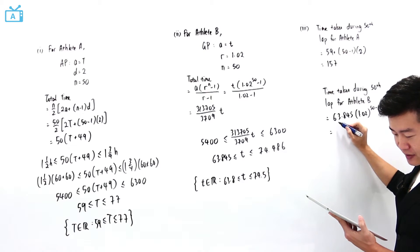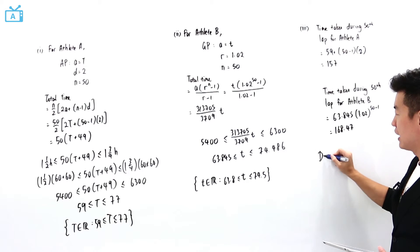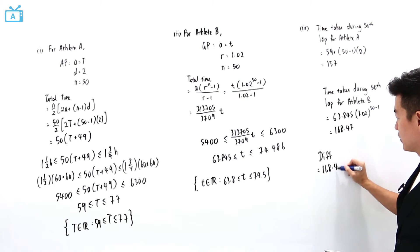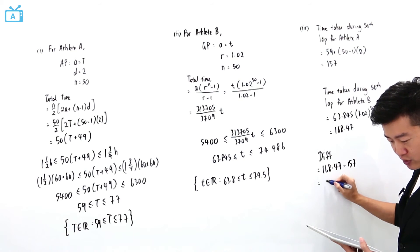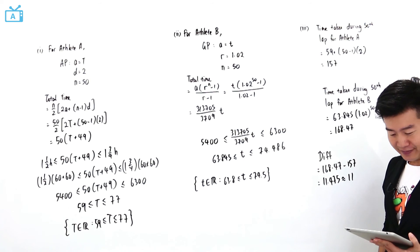The time taken is equal to 168.47. The question asked for the difference. The difference is 168.47 minus 157, which equals 11.475. This can be rounded off to the nearest second, which is 11.